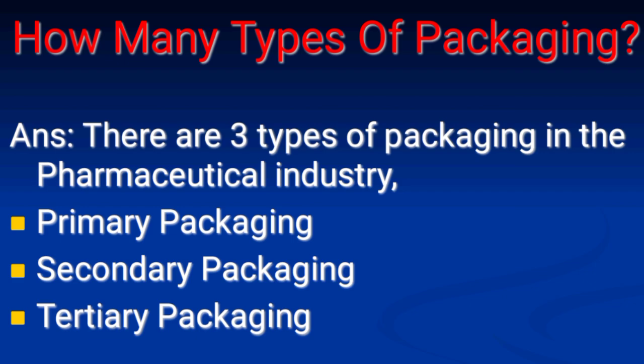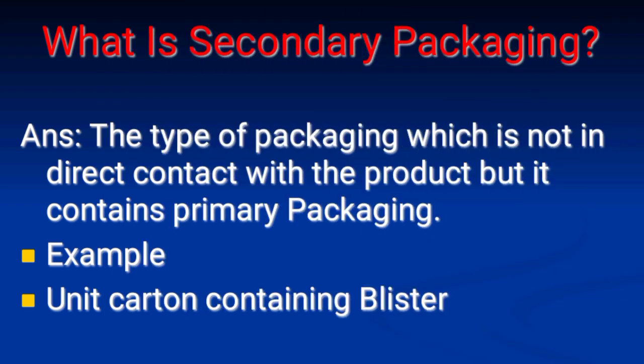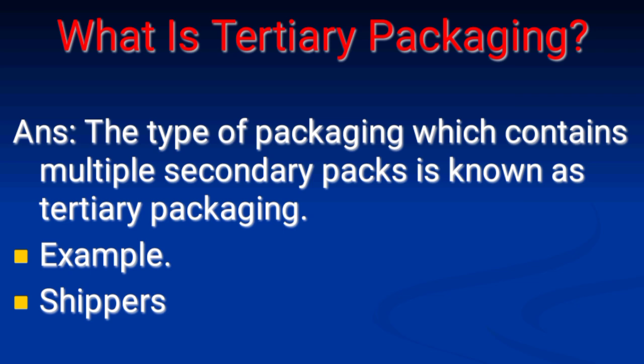Next: How many types of packaging are there? Answer: There are three types of packaging in the pharmaceutical industry. Number one: primary packaging. Number two: secondary packaging. Number three: tertiary packaging. Primary packaging is the type that comes in direct contact with the product — for example, blister packaging and glass bottles. Secondary packaging is not in direct contact with the product but contains the primary packaging — for example, a unit carton containing a blister. Tertiary packaging contains multiple secondary packs — for example, shippers.